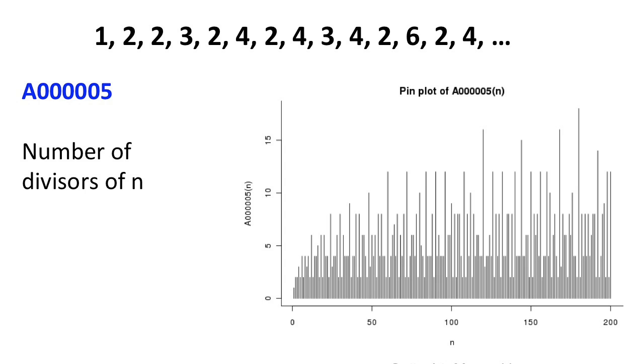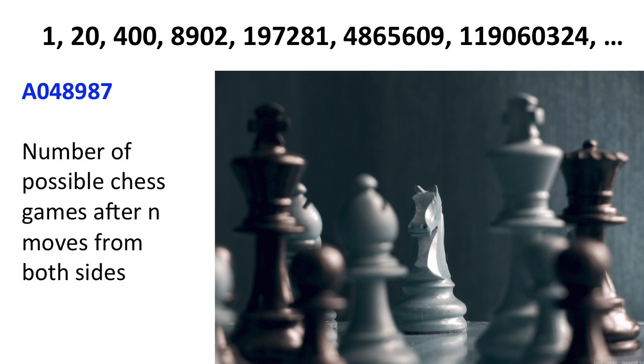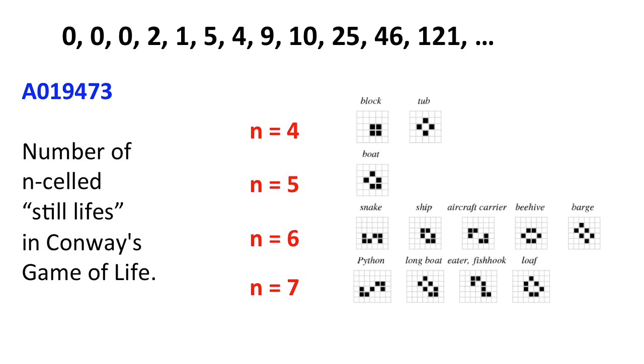Some are well known, like sequence A5, which gives the number of divisors of N. Interesting but less known is sequence A48987, the number of possible chess games after N moves from each side. Or sequence A19473, the number of N-celled still lifes in Conway's Game of Life.